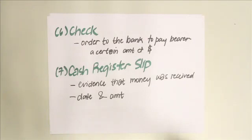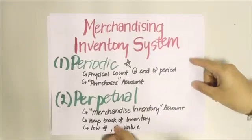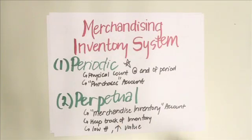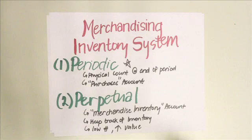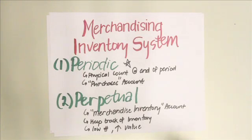There are two inventory systems that merchandising concerns employ: the periodic system and the perpetual system. In a periodic system, you have to count the goods physically at the end of the accounting period because you do not keep track of movements in merchandise inventory throughout the year — all purchases are recorded in the purchases account. In a perpetual inventory system, you have a merchandise inventory account where all purchases or goods sold are recorded.